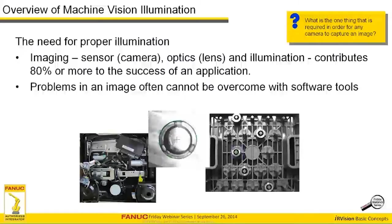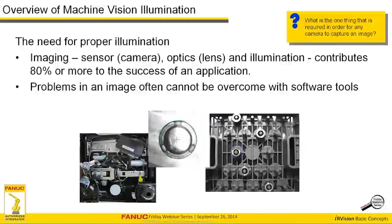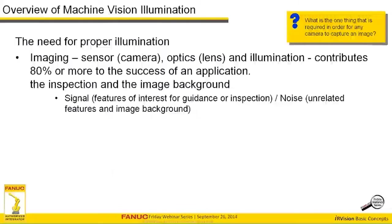Quick question: what is the one thing required for any camera to capture an image? It's a trick question — the answer is lighting. Our eyes, a camera sensor, or anything that extracts image information from the real world has to rely on light. Nothing can happen if there's not some electromagnetic spectrum being reflected off of a part or off of a scene.